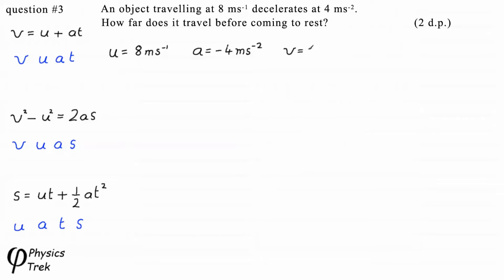V, the final velocity, is 0 metres per second. S, the distance, we have to find.